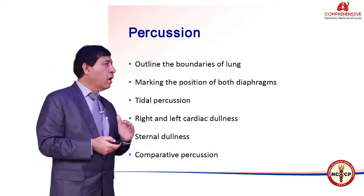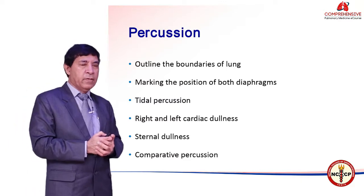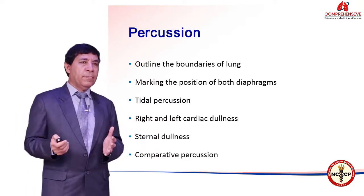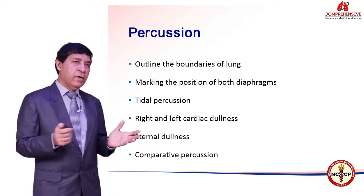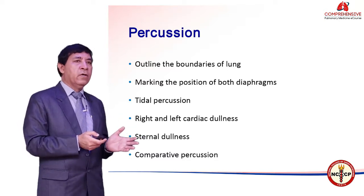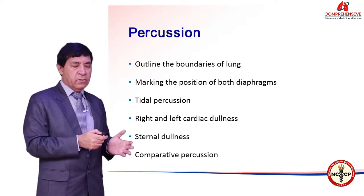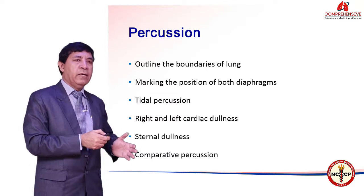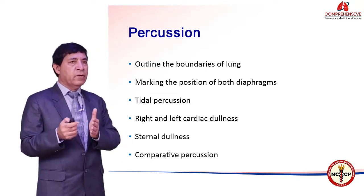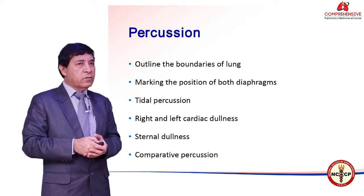The first and foremost important thing on percussion is to outline the boundaries of the lungs. You start from above downward and try to localize both diaphragms. We know that the position of the diaphragm is different on left and right — on one side you have the 6th, 8th, and 10th intercostal spaces, and on the other side you have the 5th, 7th, and 9th intercostal spaces.